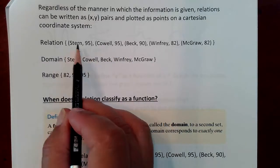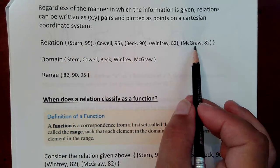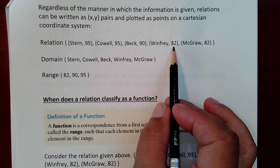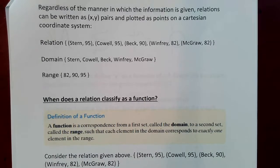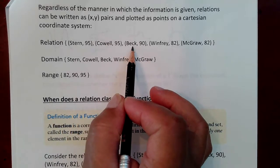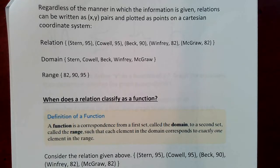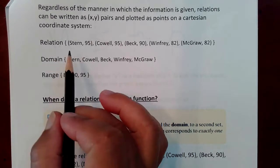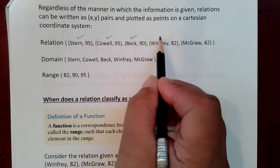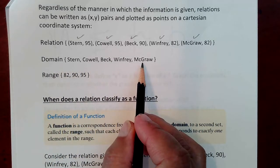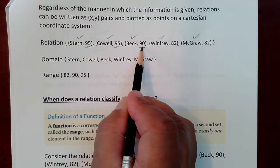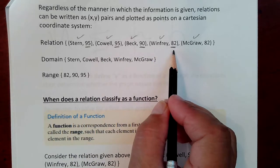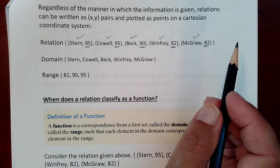Here we have a relation — XY pairs. For instance, Oprah Winfrey was clocked as making a salary of $82 million. McGraw was tabulated as making $82 million also. Beck was charted as making $90 million. If you take out all the X values — Stern, Cowell, Beck, the names of the celebrities, and McGraw — those individual coordinates make up what's called the domain. And if you take out all the second coordinates — 95, 80, 90, and 82 — those make up what's called the range.